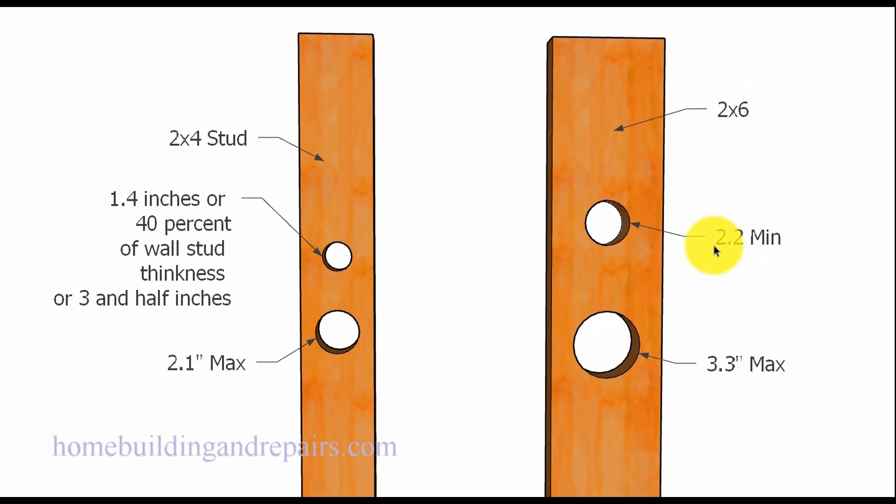Now if you go to a 2x6 you can have a 2.2 inch minimum, two and a quarter basically, and then 3.3 is the maximum. This is 40% of the thickness. This is 60% of the thickness.